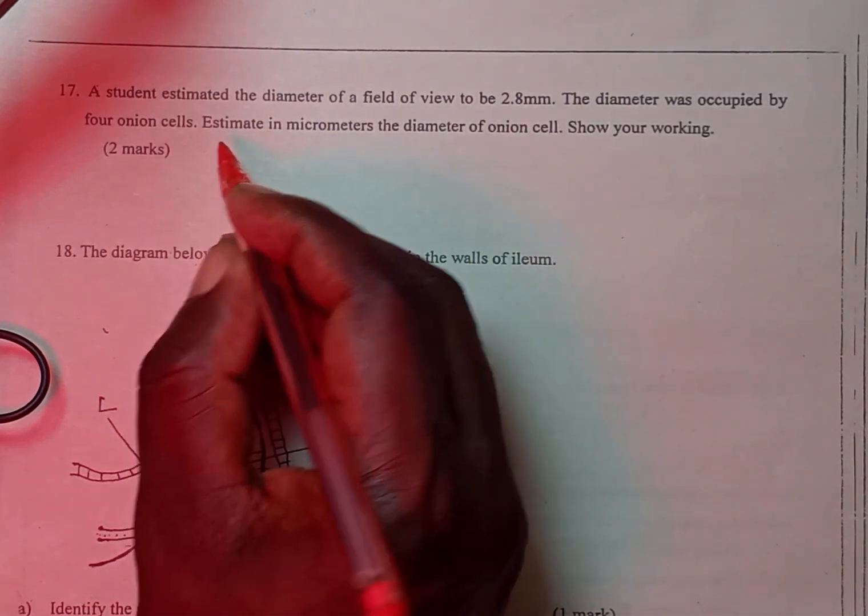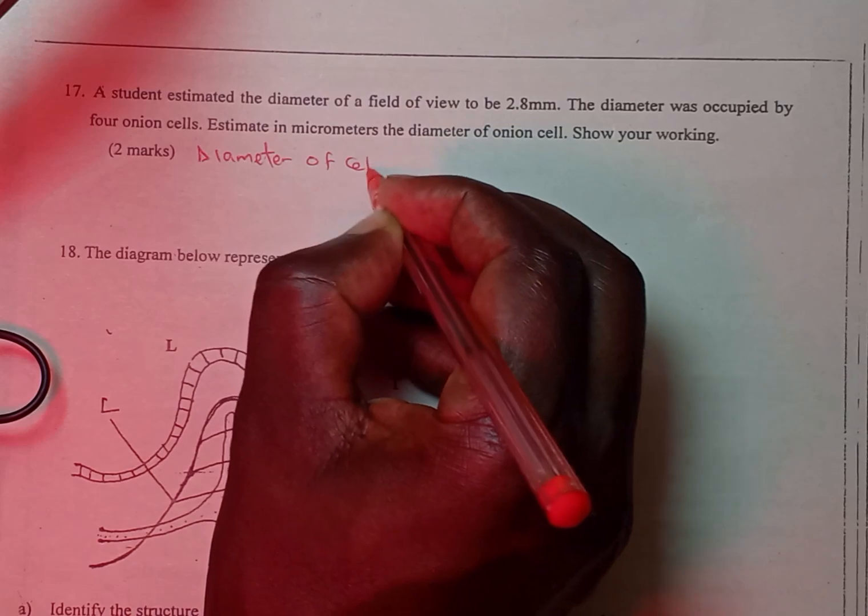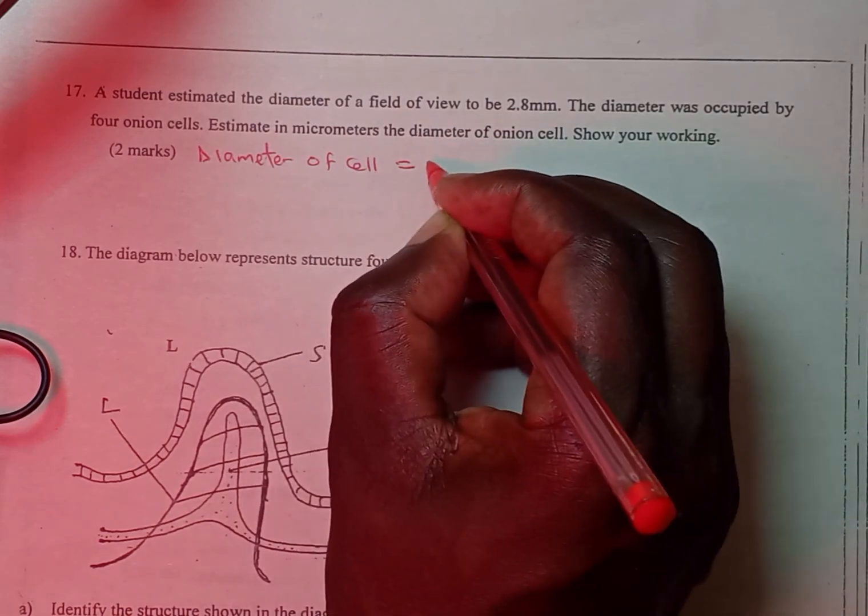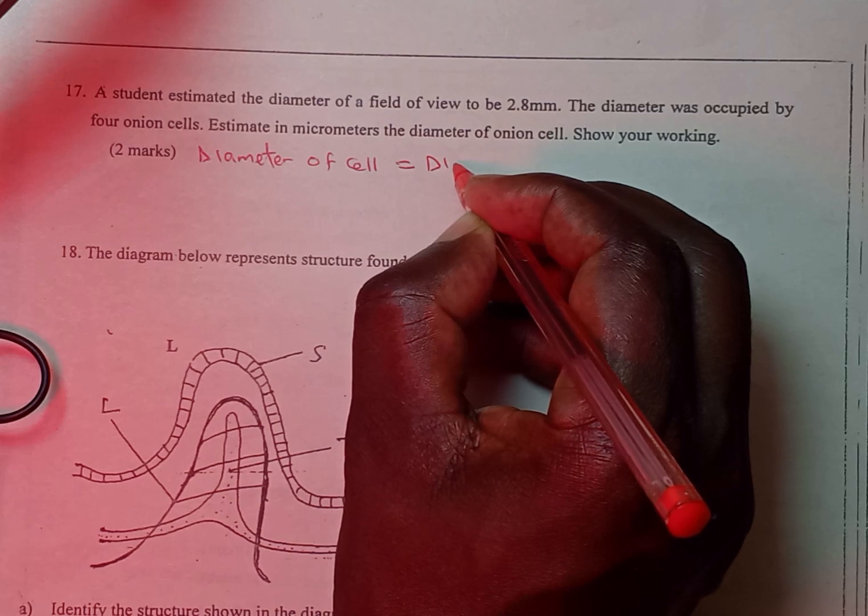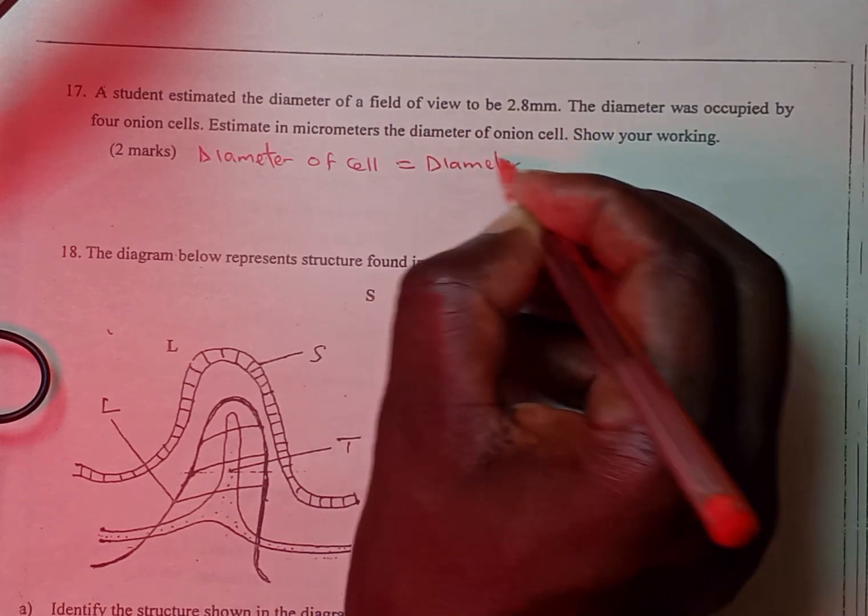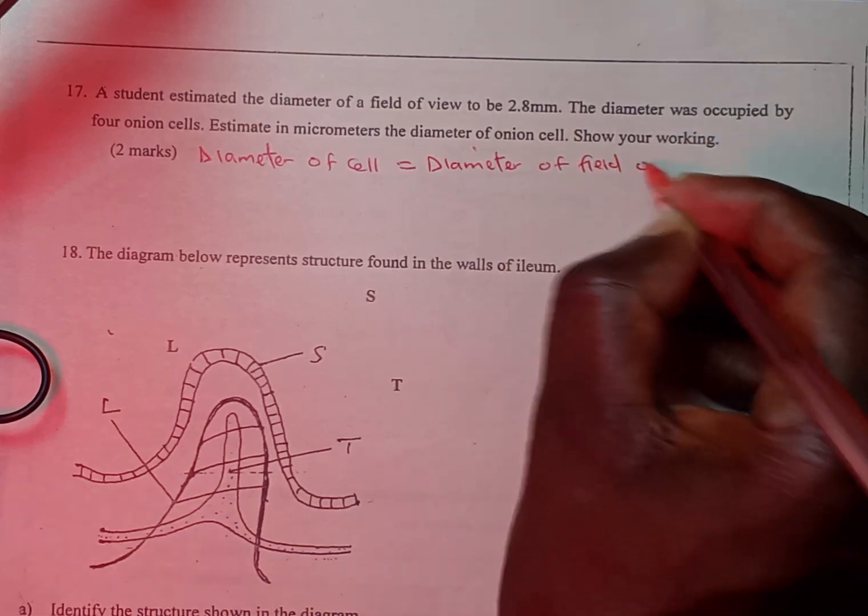So we know the diameter of the cell is given by diameter of field of view.